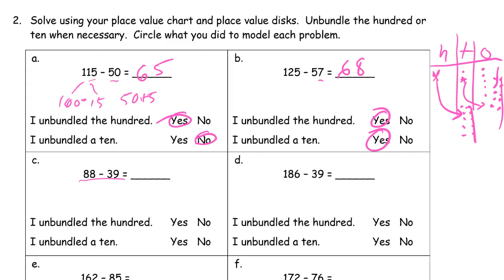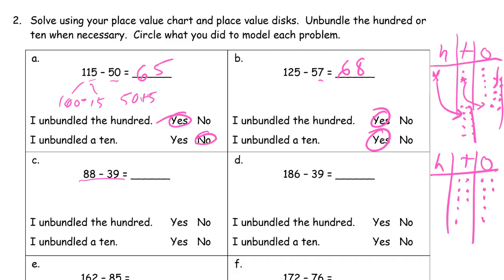Now for 88 minus 39 — it's a little cramped, so use the back of another piece of paper if needed. Draw 88: eight tens and eight ones. I have to cross out 39, so look at the ones digits first. I need to cross out 9 ones, but I only have 8, so I have to unbundle a 10.